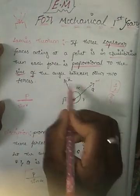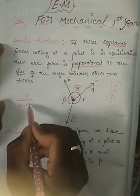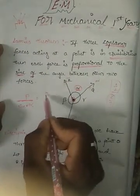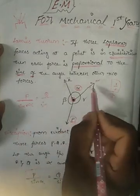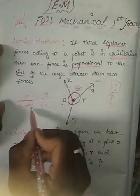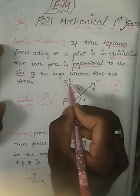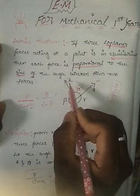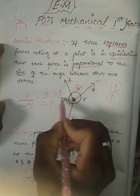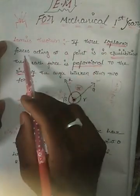Between forces R and Q there is angle alpha, so we put alpha. Next, for force Q — opposite to Q is beta, so Q by sine beta. For force R — opposite to R is gamma, so R by sine gamma. This gives the relation for Lamy's theorem: P/sin α = Q/sin β = R/sin γ.